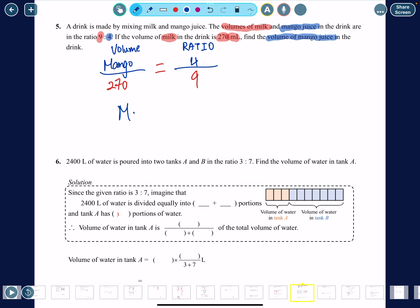So the volume of mango is 4 over 9 times 270. What is 4 divided by 9 times 270? 120. So we have 120 ml for the mango. It makes sense because 4 is smaller than 9, so you're expecting the volume of mango juice to be smaller than the milk.